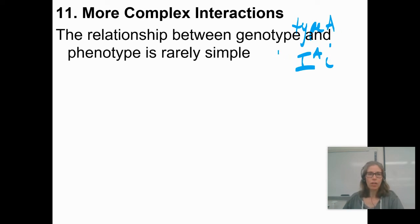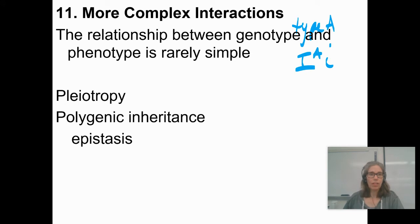There are other interactions, though, that are a little bit more complex than that. For example, pleiotropy is when one mutation or one gene affects many different traits. And then sort of almost the opposite of that is that you can have many different genes that affect one trait. An example of that is epistasis.